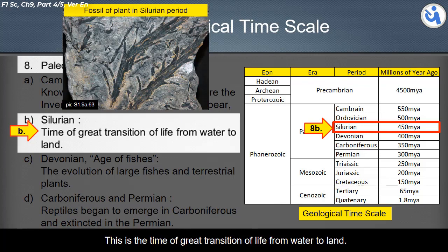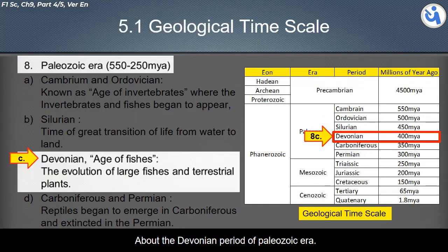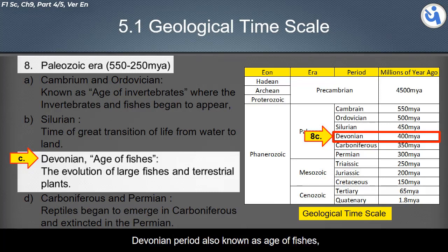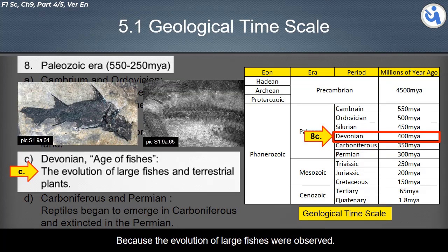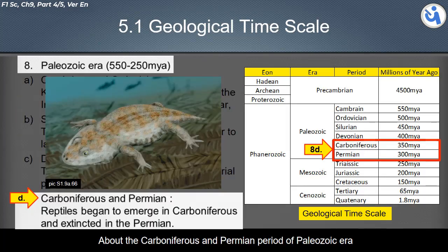The following period of the Paleozoic era is the Silurian, which occurred at 450 million years ago. This is the time of great transition of life from water to land. The Devonian period occurred at 400 million years ago and is also known as the Age of Fishes, because the evolution of large fishes was observed. In the same age, terrestrial plants were also observed.